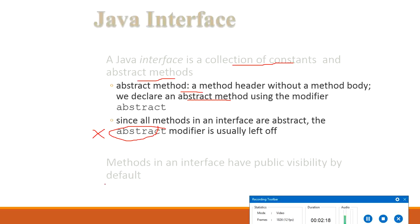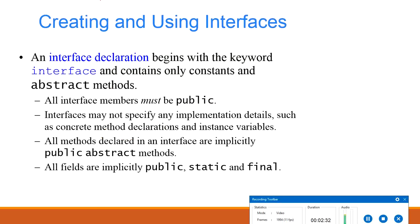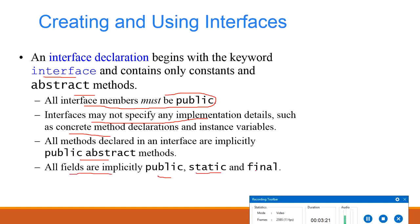All methods in an interface have public visibility by default. They have only the method definition — no method body — and since all methods are abstract, the abstract keyword is not used. Interface declaration begins with the keyword 'interface'. It can contain only constant variables and abstract methods. All interface members must be public. Unlike abstract classes, interfaces may not contain concrete method declarations or instance variables.